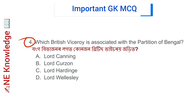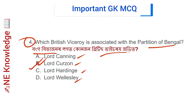Question number 4: Which British viceroy is associated with the Partition of Bengal? Options: Lord Canning, Lord Curzon, Lord Hardinge, and Lord Wellesley. Correct answer: Option B — Lord Curzon. The Partition of Bengal happened in 1905 by Lord Curzon.